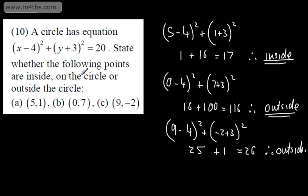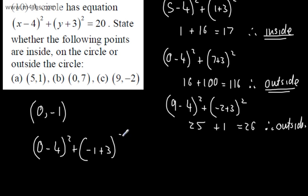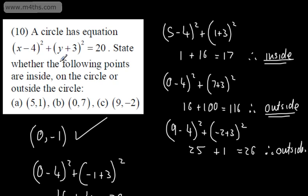Consider a point that will be on the circle — let's check 0 comma negative 1. That gives 0 minus 4, all squared, plus negative 1 plus 3, all squared — that's 16 plus 4, which equals 20. Therefore that point would be on the circumference of the circle. There are some basic questions using the equation of a circle. In the next few videos, we're going to look at some more challenging ones when we need to use circle theorems. So if in doubt, sketch it out — and remember, all questions are not going to be of the same form. Just use the understanding that you've got and the range of skills, and you should be able to tackle them.